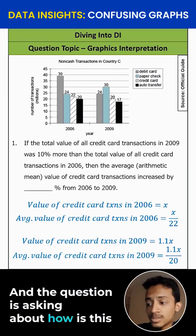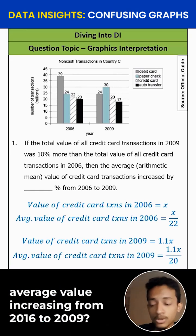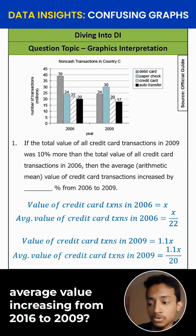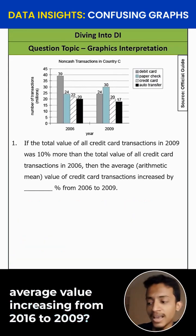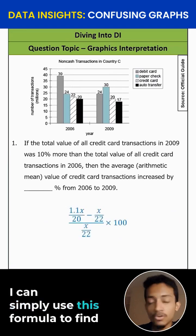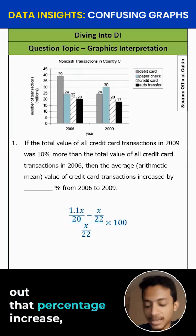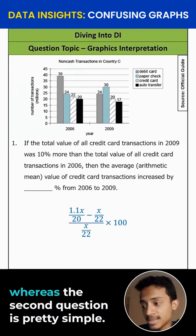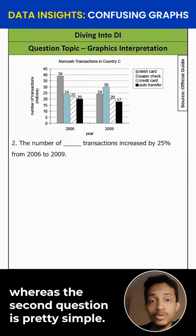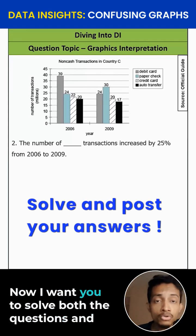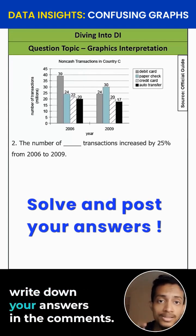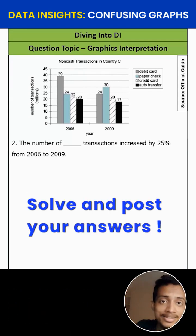The question is asking about how the average value is increasing from 2006 to 2009. I can simply use this formula to find out that percentage increase. The second question is pretty simple — I want you to solve both questions and write down your answers in the comments.